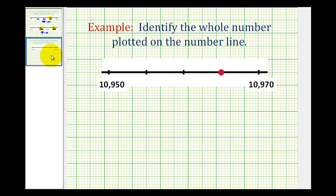Let's take a look at one more example. From 10,950 to 10,970 would be 20. And this interval of 20 is divided into 1, 2, 3, 4 equal parts, and 20 divided by 4 is equal to 5. So each tick mark represents 5.